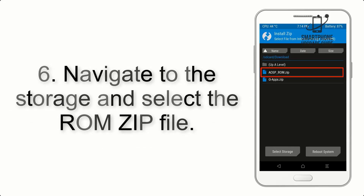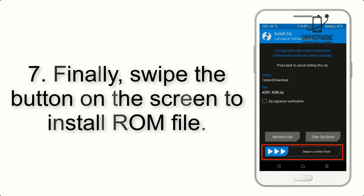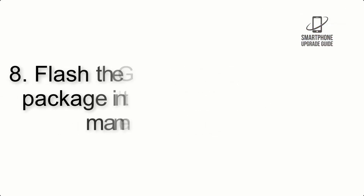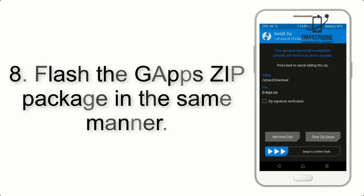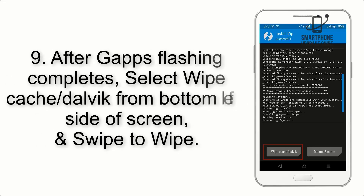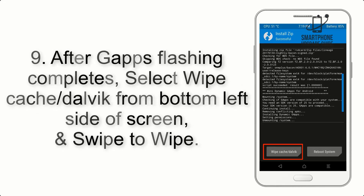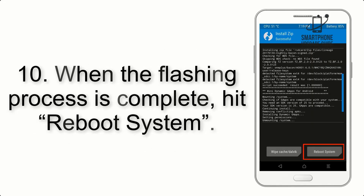Step 5: Go back to the recovery main screen and tap on the Install button. Step 6: Navigate to the storage and select the ROM zip file. Step 7: Swipe the button on the screen to install the ROM file. Step 8: Flash the GApps zip package in the same manner. Step 9: After GApps flashing completes, select Wipe Cache and Dalvik from the bottom left side of the screen and swipe to wipe.